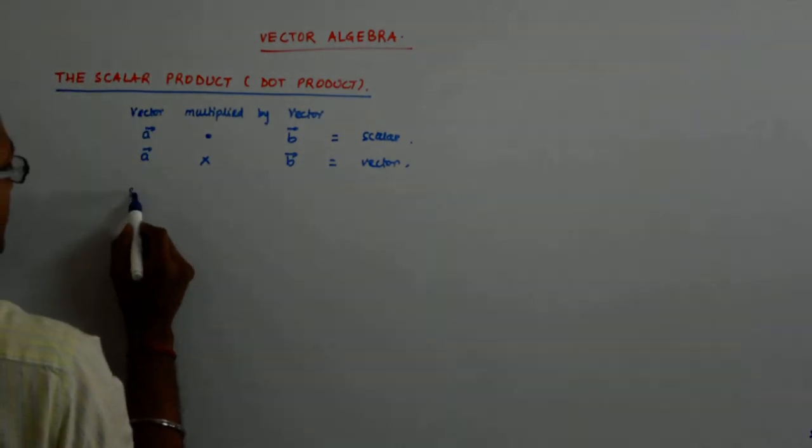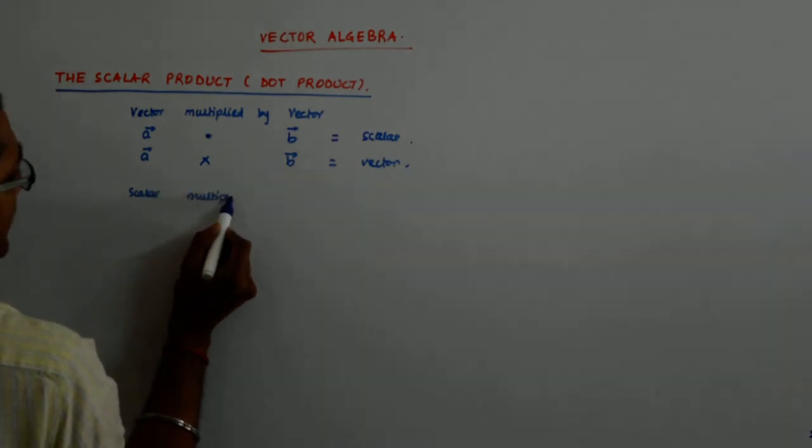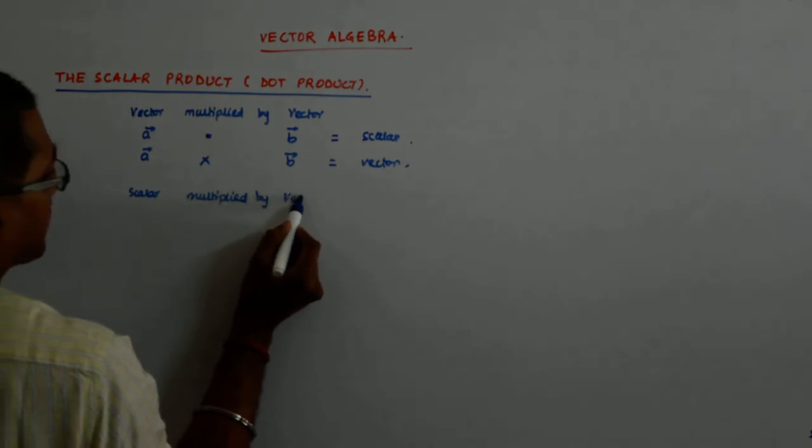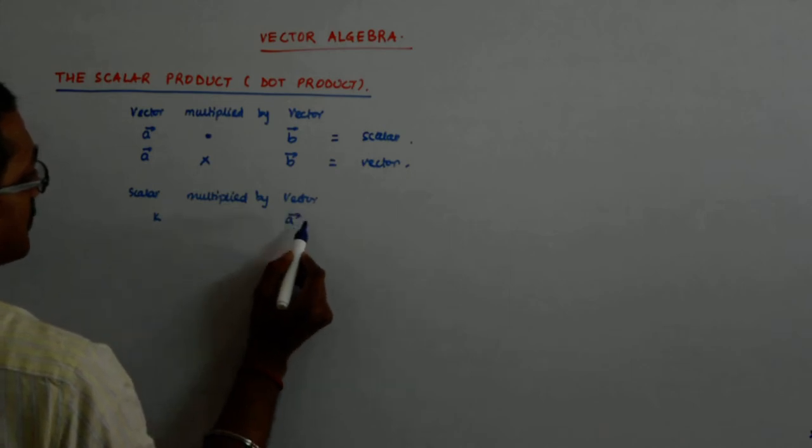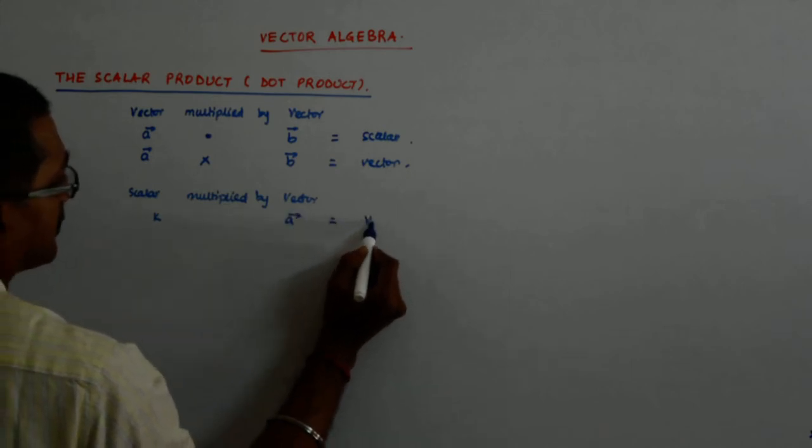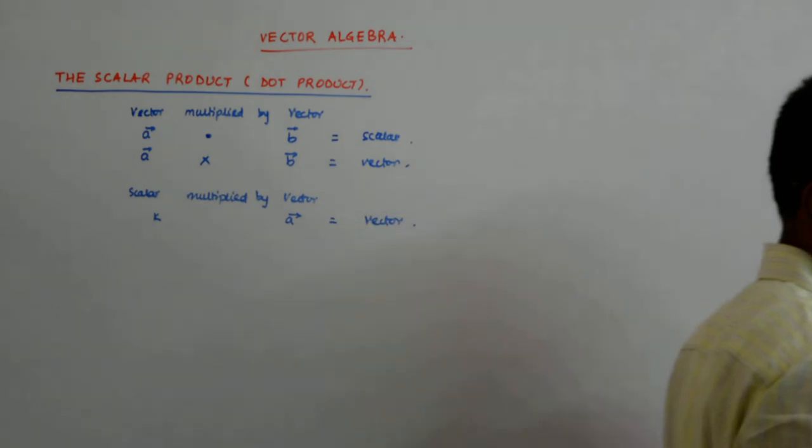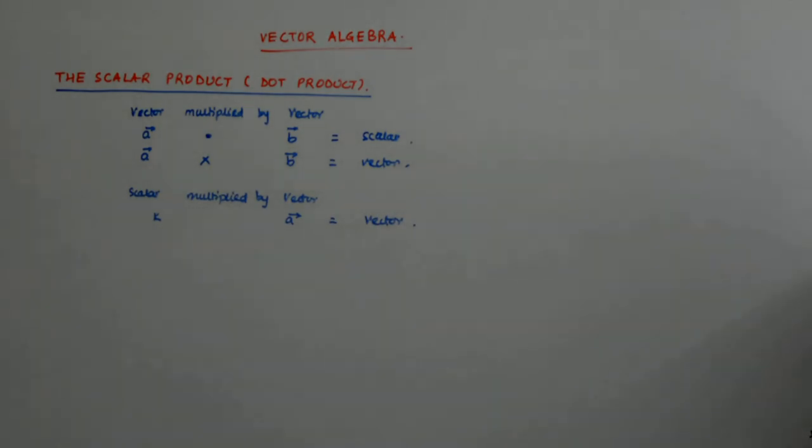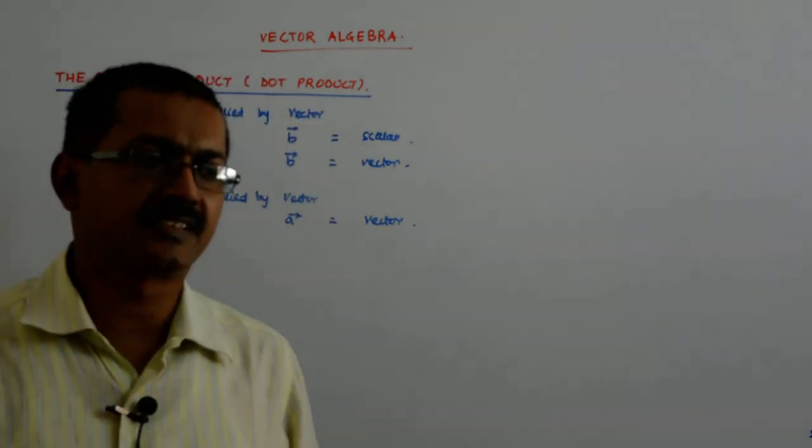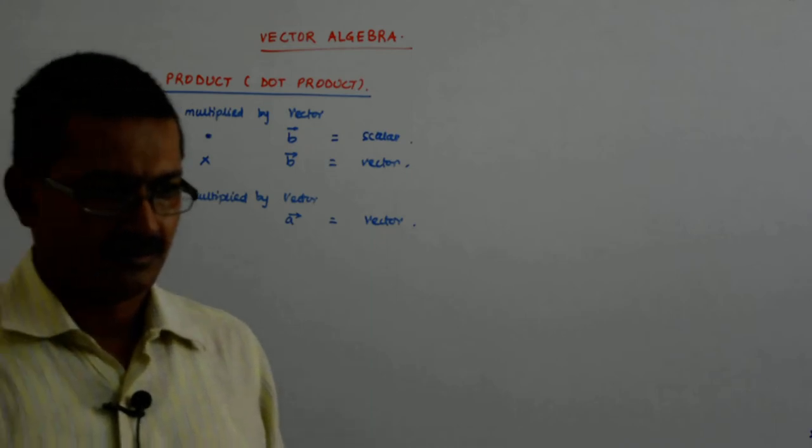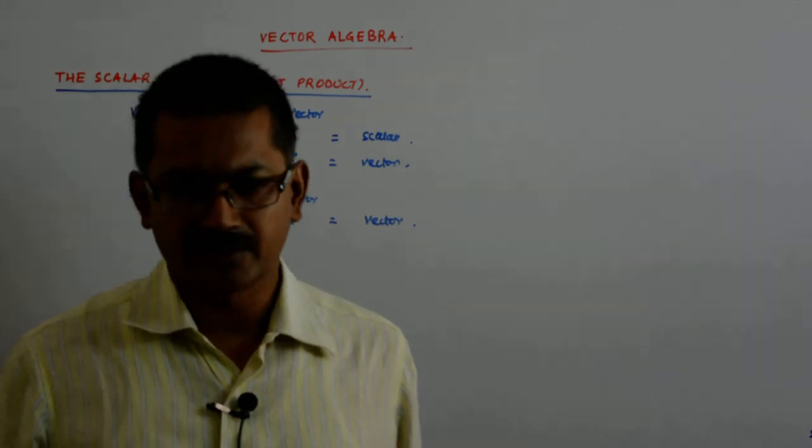Scalar by a vector, scalar multiplied by a vector we have already studied. This is like k into a, this is a vector. Do not start getting confused between them. The scalar multiplies with the vector, you get the vector in the same or the opposite direction according as the scalar is a positive or a negative real number and the length gets multiplied by whatever scalar you are multiplying it with.